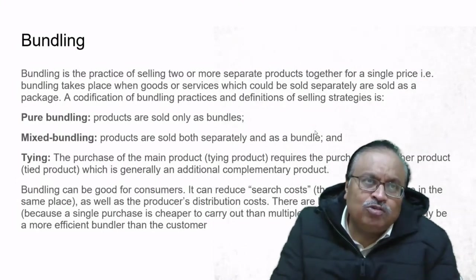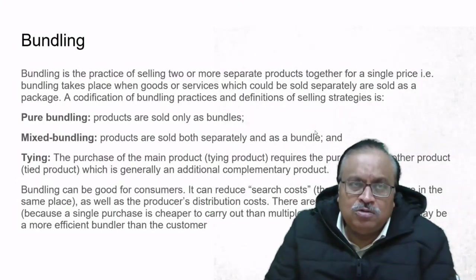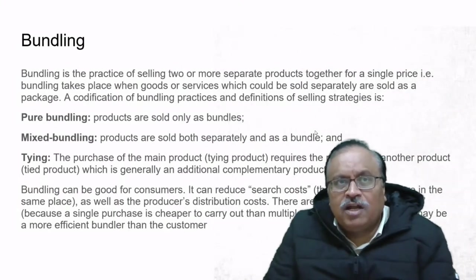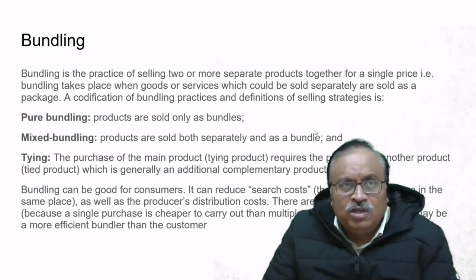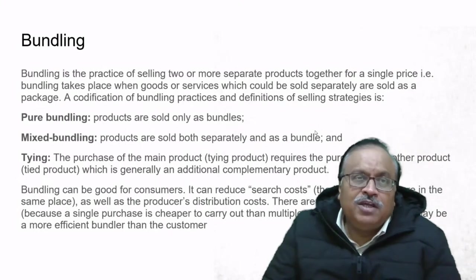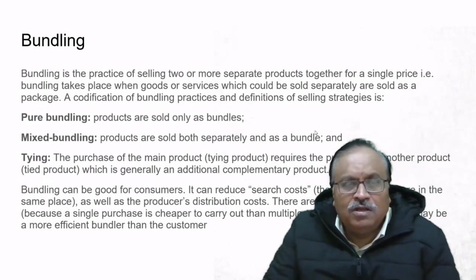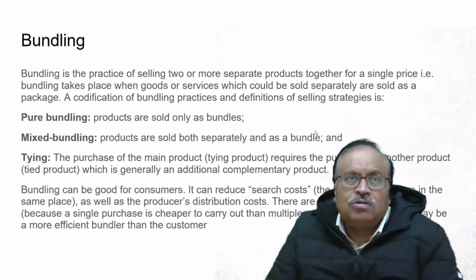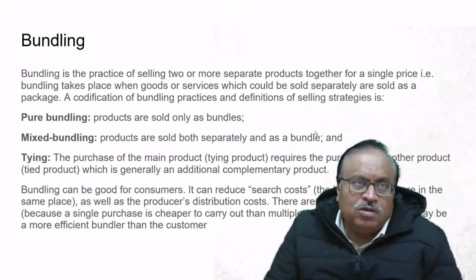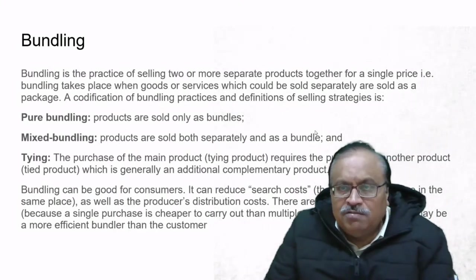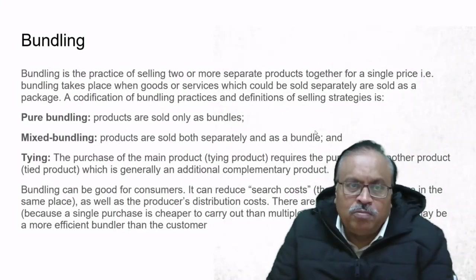Many times when we purchase consumer goods like a refrigerator, it comes with a free service warranty of one or two years, or we can add cost to get three or five years of service. The same happens for ACs. This is how bundling is done. A codification of bundling practices includes: pure bundling, where only products are sold as bundles; mixed bundling, where products are sold both separately and as a bundle; and tying, where purchase of a main product requires purchase of another tied product.